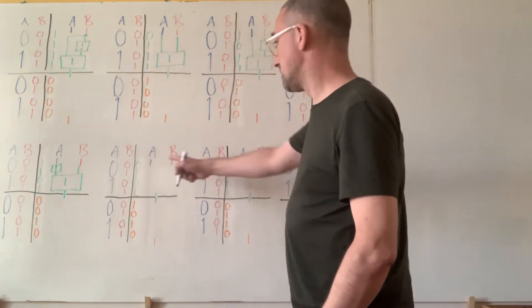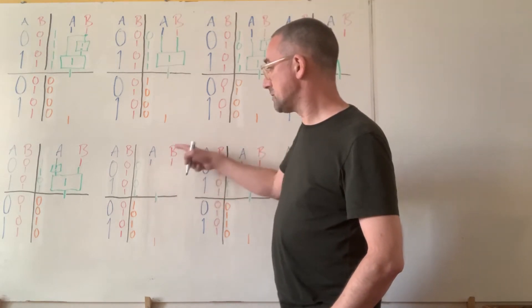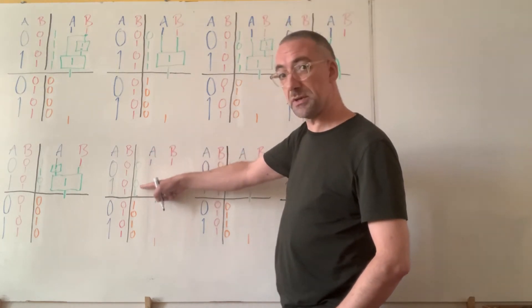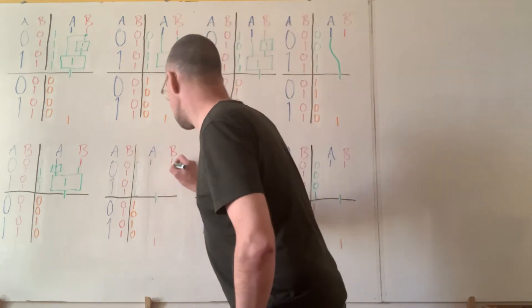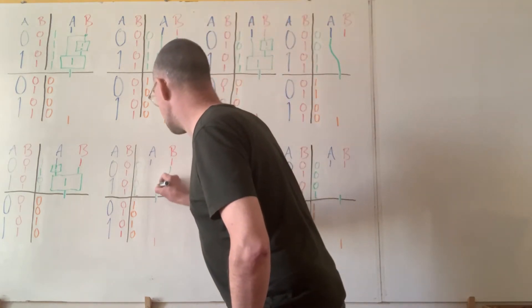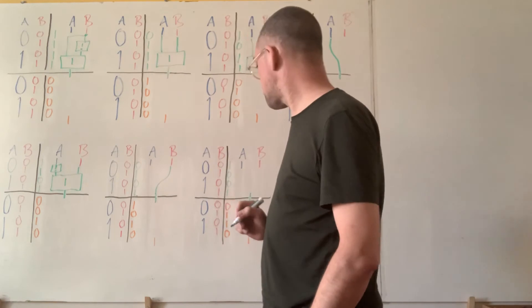Okay. We're doing alright. 0, 1, 0, 1. Top to bottom. We can see that the output is the same as B. So, this is another job for a piece of wire.